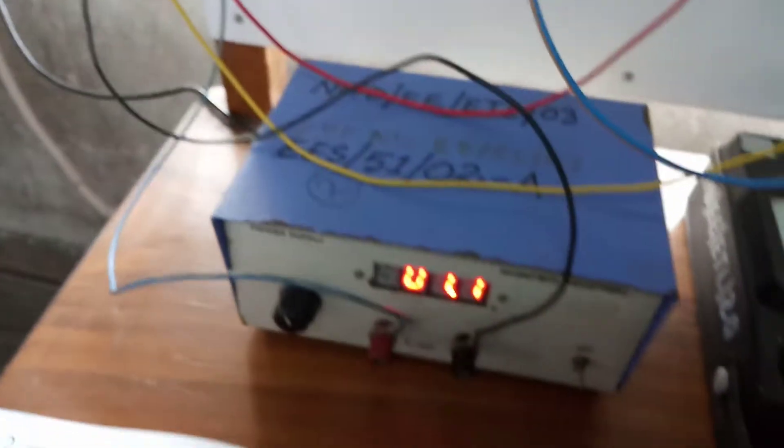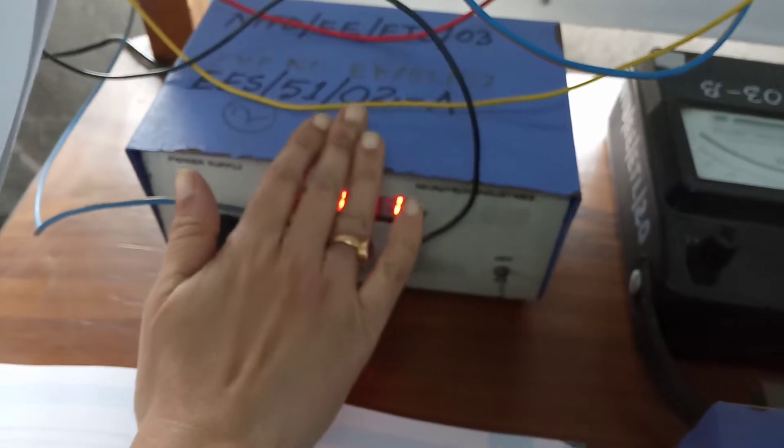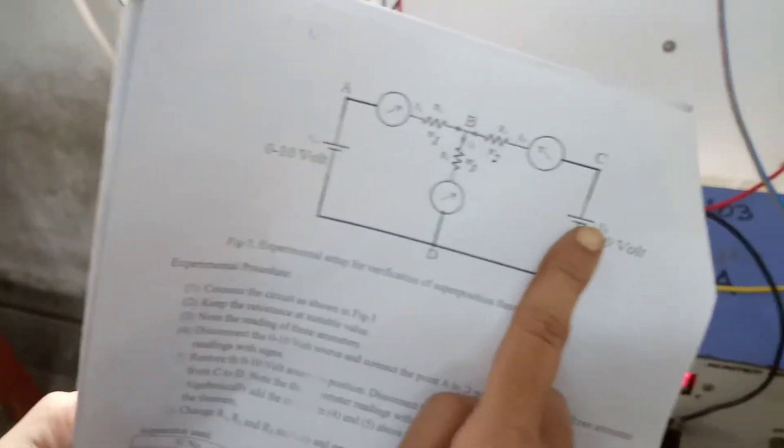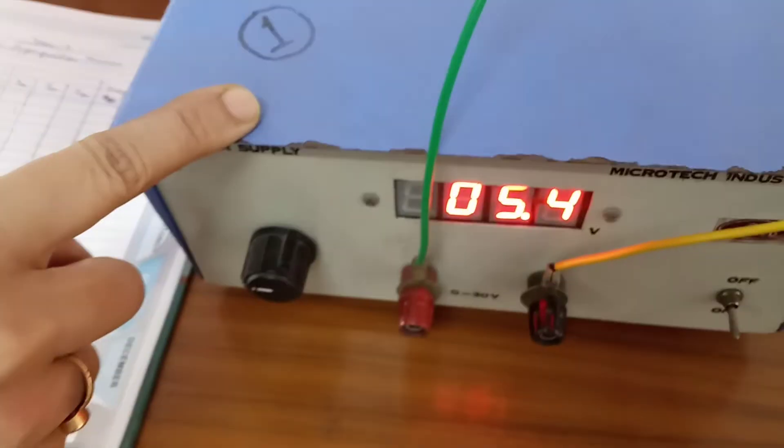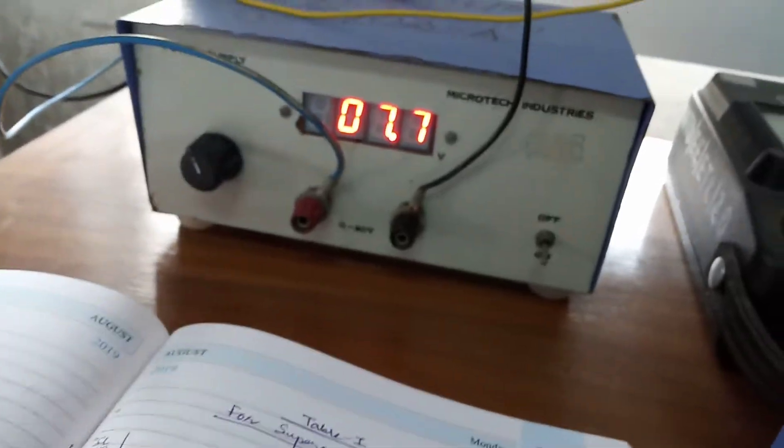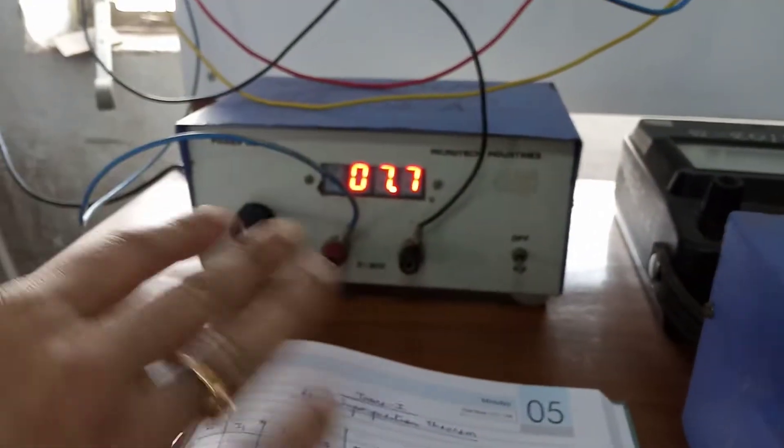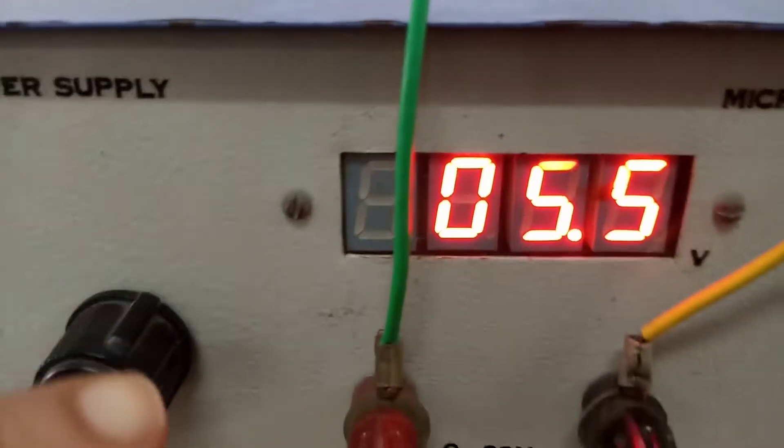You can see in the experimental setup these are two sources. This is the first one and the second source is this. The first source is showing 7.7 volts and the second source is 5.5 volts.